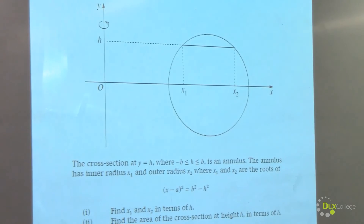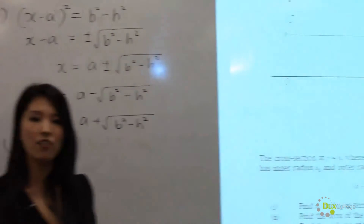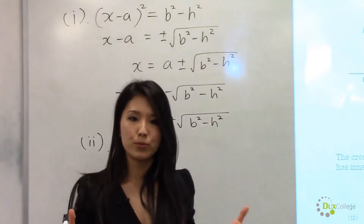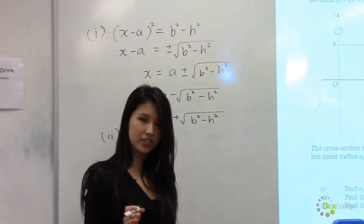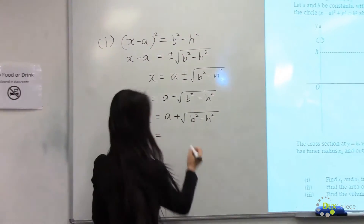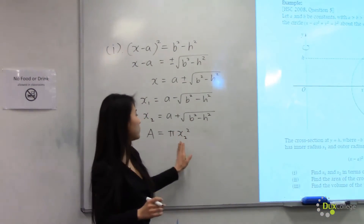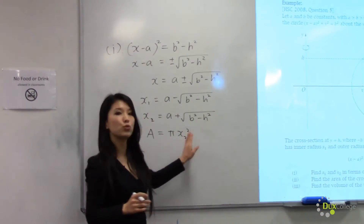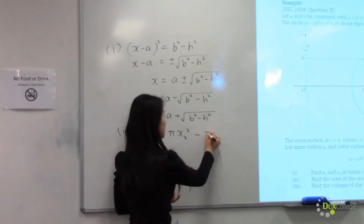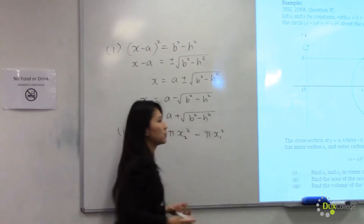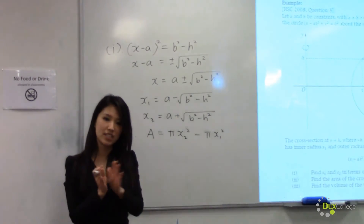The area must be the area of the outer circle minus the area of the inner circle to find the area of the disk. So we have pi times x2 squared — the area of the outer circle — minus pi times x1 squared, the area of the inner circle.